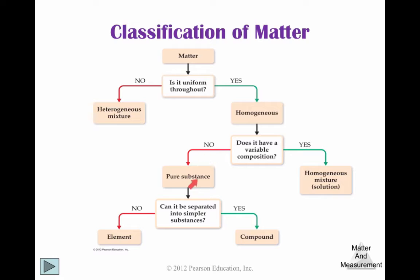If it does not have variable composition — maybe it is all water, all hydrogen, or all oxygen — it's a pure substance. A pure substance has distinct properties and a composition that does not vary from sample to sample; it's always water. If it cannot be separated into simpler substances, it's an element. If it can be separated, then it's a compound. An element cannot be decomposed to simpler substances; a compound can. For example, water — if you run electricity through water, you make hydrogen and oxygen gas.